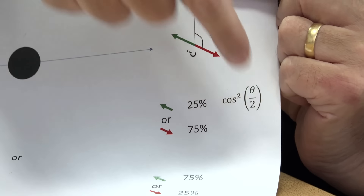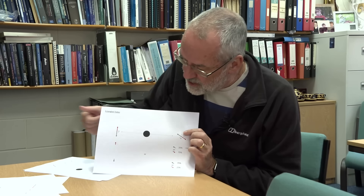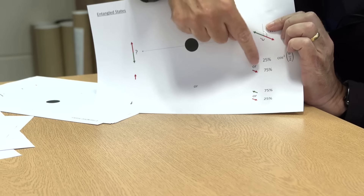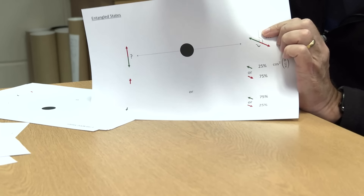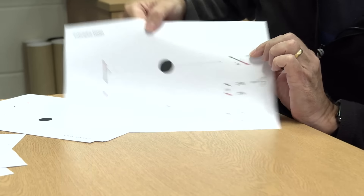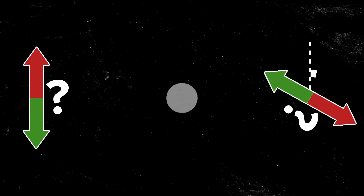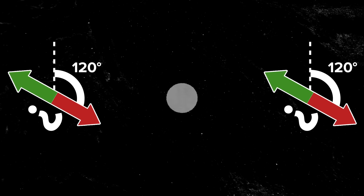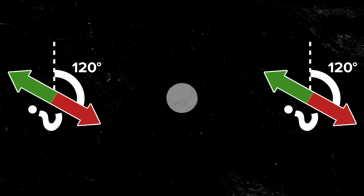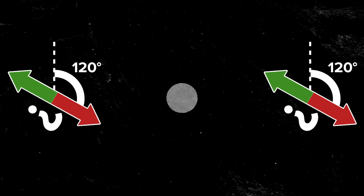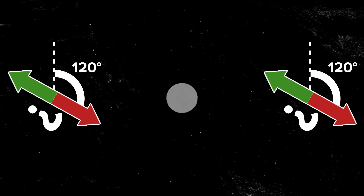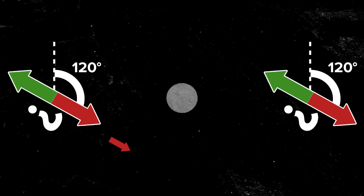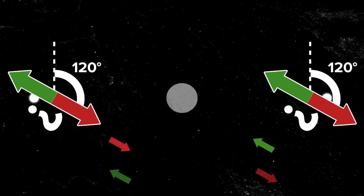If you want the math: a fairly straightforward quantum mechanical calculation shows that if the angle between the two apparatuses is θ, the probability of getting the 'other' color is cos²(θ/2). So to recap: if this one is up, 25% of the time this one will be up (the other color because the apparatus is turned), and 75% of the time it'll be the same color. One final case: if we rotate both apparatuses through 120 degrees, they end up measuring the same direction, so it's exactly the same as the first example — they always come out opposite.